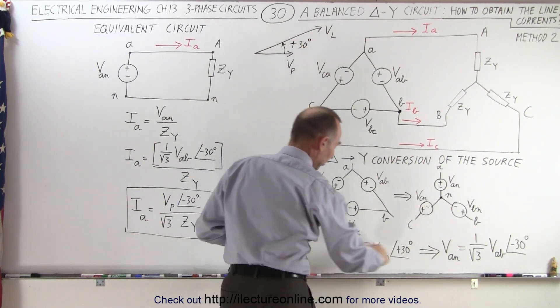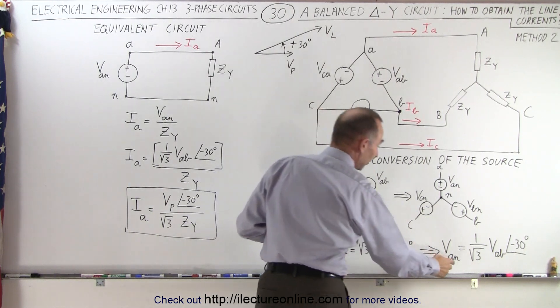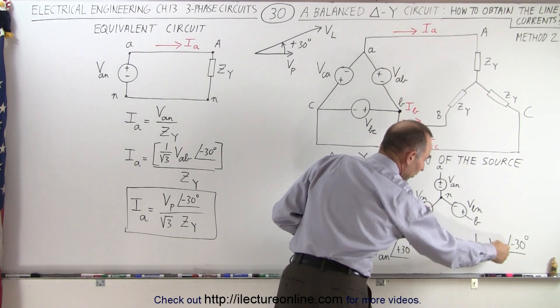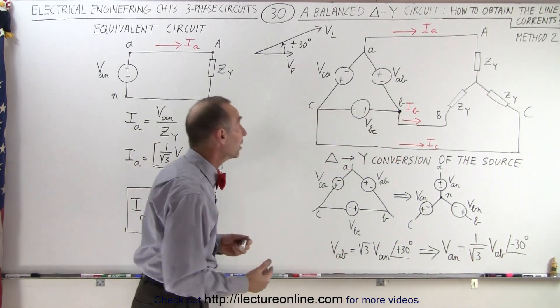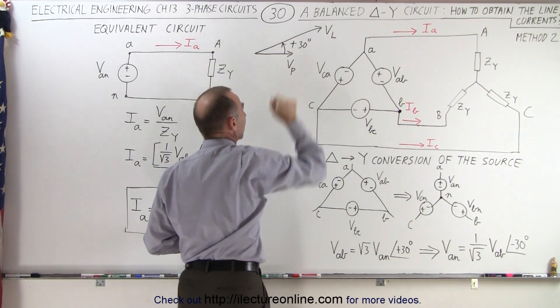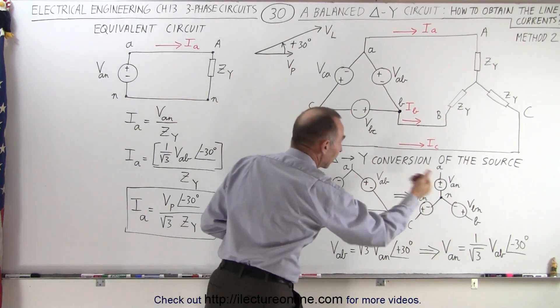So we can see that relationship right here, but then if we convert that and solve for VAn, which is the phase voltage, it's 1 over the square root of 3 times the line voltage with a phase difference of minus 30 degrees. We have a minus 30 degrees phase difference for the phase voltage relative to the line voltage. And that's what we end up when we do the delta to Y conversion.